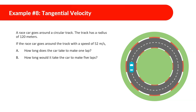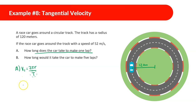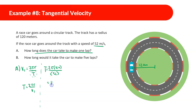A race car goes around a circular track with a radius of 120 meters at a speed of 52 meters per second. How long does it take the car to make one lap? We're looking for the period. Using algebraic manipulation of v = 2πr/T, we get T = 2πr/v. So: T = 2π × 120 ÷ 52 = 14.5 seconds.